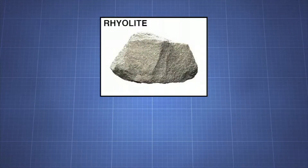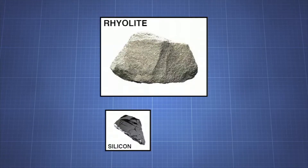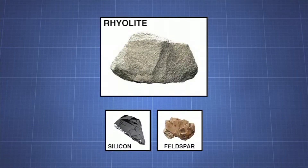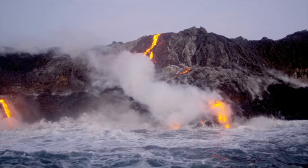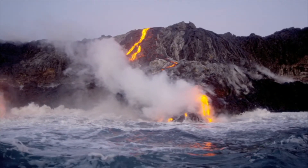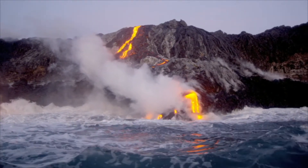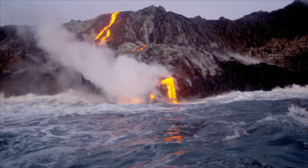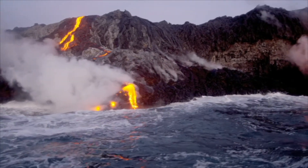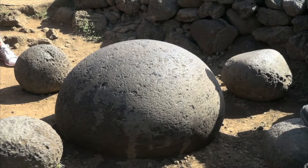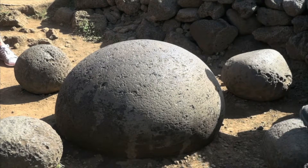Rhyolite is an extrusive igneous rock with high proportions of silica and feldspar. It is therefore a felsic rock. Scoria is a type of vesiculated rock, formed when magma rapidly rises to Earth's surface. As the pressure drops, dissolved gases in the rock form vesicles or bubbles. As the rock cools and solidifies, the vesicles harden, forming a very porous volcanic rock.